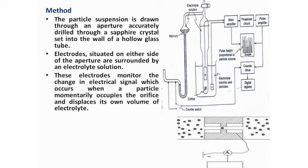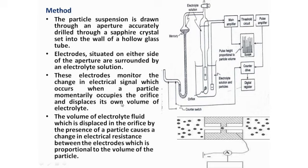The electrodes monitor the electrical signal which occurs when particles momentarily occupy the orifice and displace the electrolyte. When the particle momentarily displaces the electrolyte, it changes the electrical resistance. This signal goes through an amplifier and threshold circuit to count the particles.